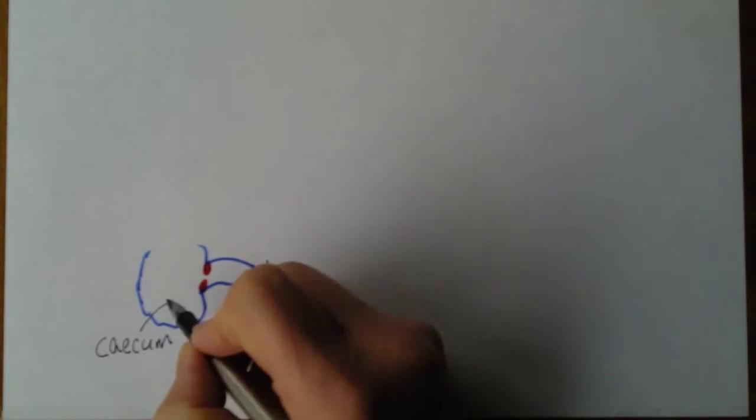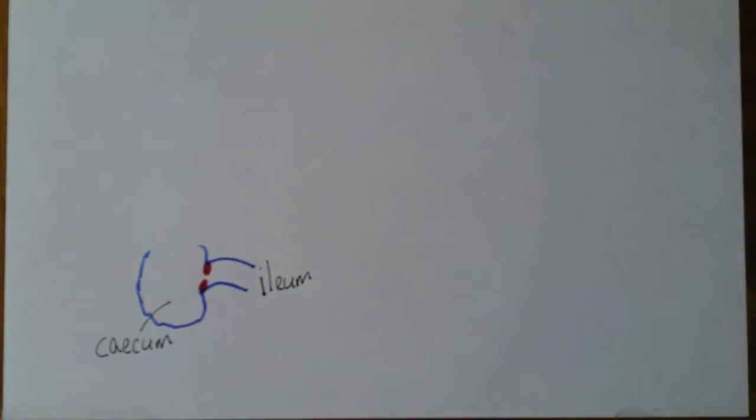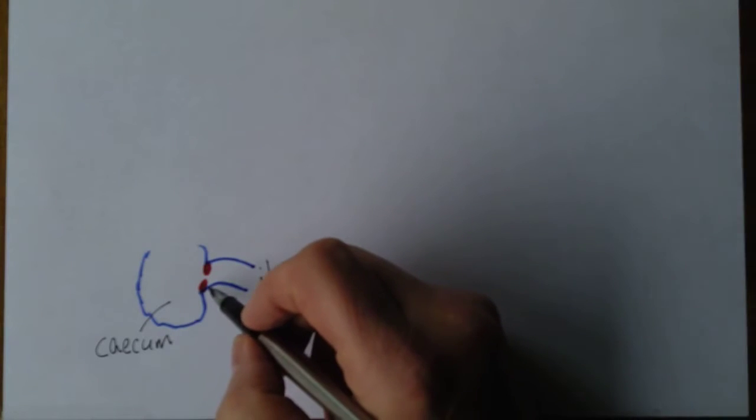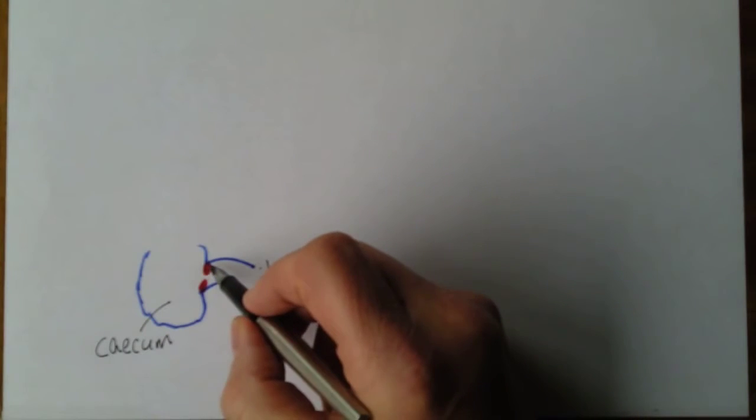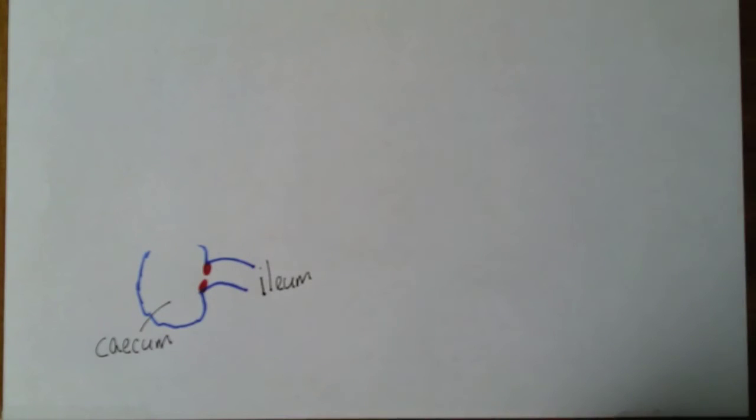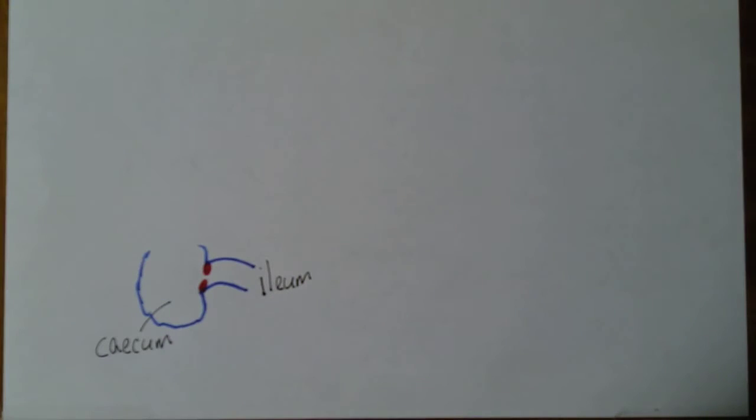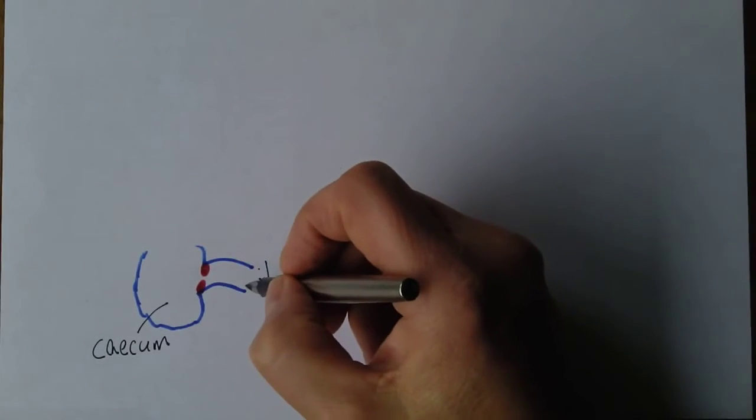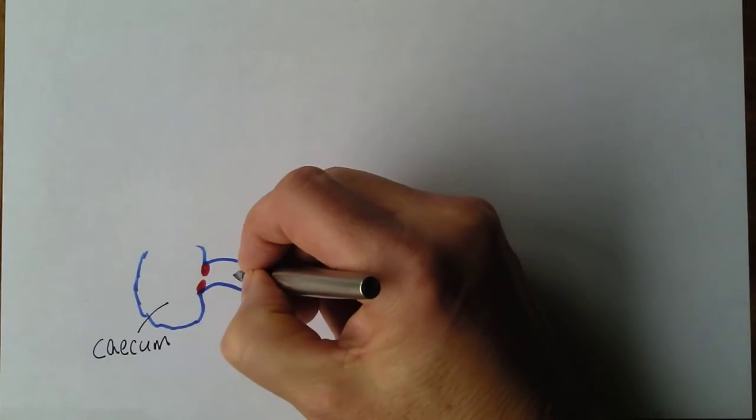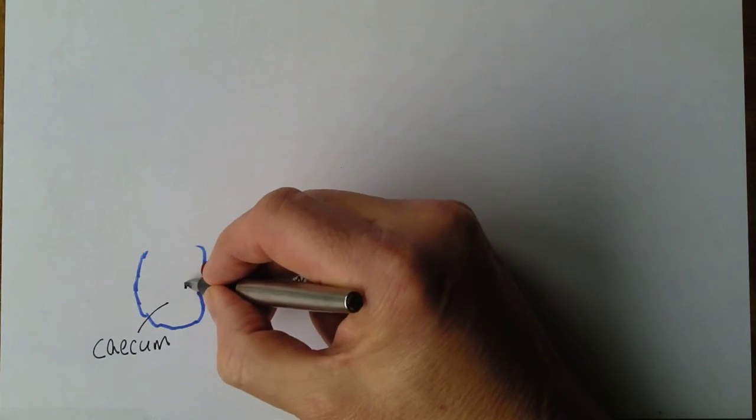The cecum is this first pouch of the small intestine, it's about six centimeters across and this valve here would be the ileocecal valve. The idea here is that material is able to get from the ileum into the cecum but once it's in the cecum it won't go back to the ileum. Chyme will go through here, it's still called chyme at this stage.